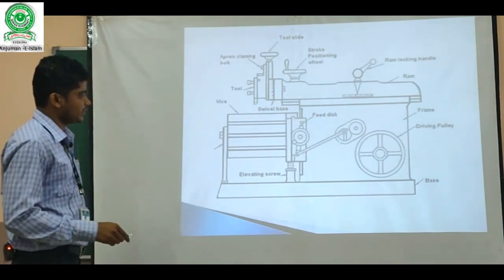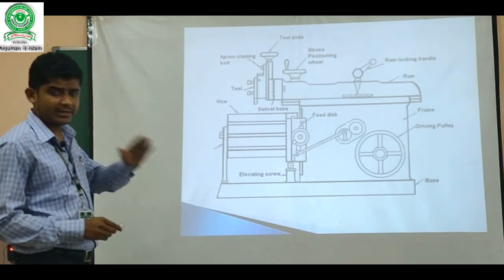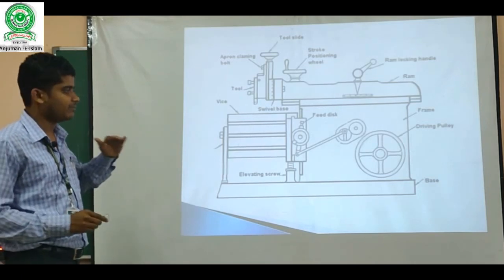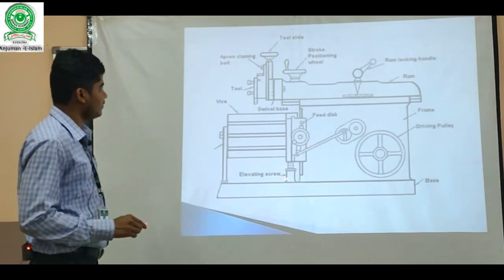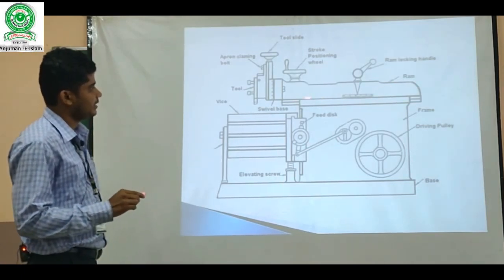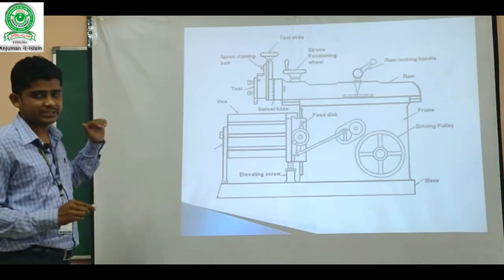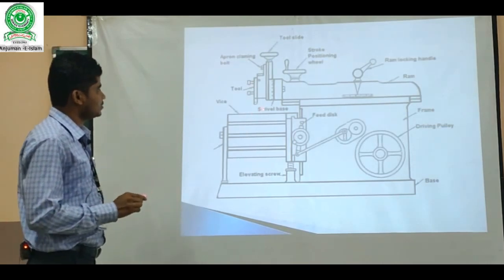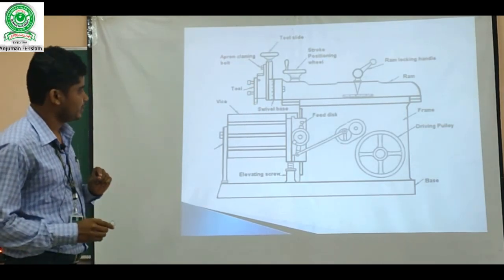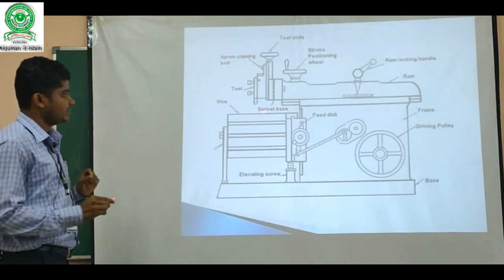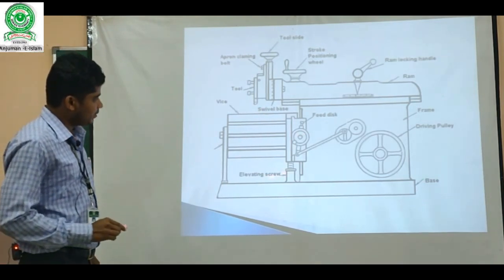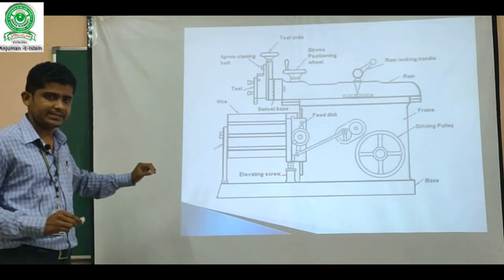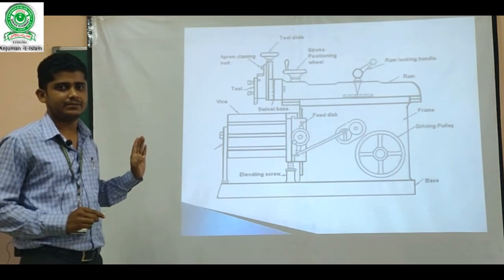Let us discuss the important parts of the shaper machine. We have a base — every machine tool's base is made up of cast iron to withstand heavy loads and vibrations. We have a ram, which reciprocates horizontally. On the tool post we fix a single point cutting tool. On the table we fix the workpiece. We also have an elevating screw, which is used to fix the table at any desired position.